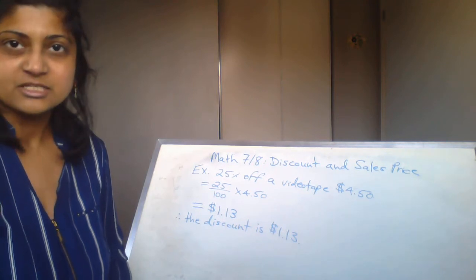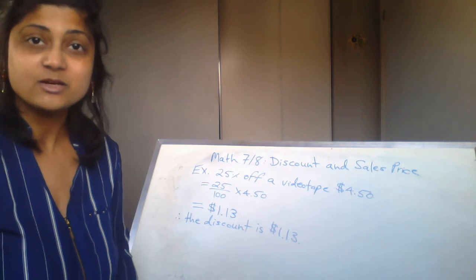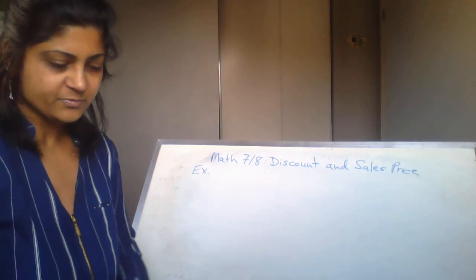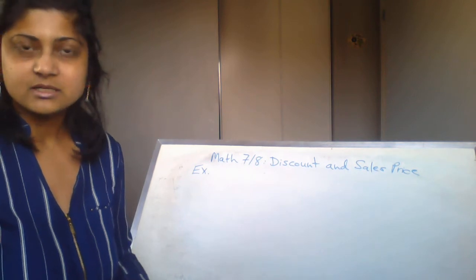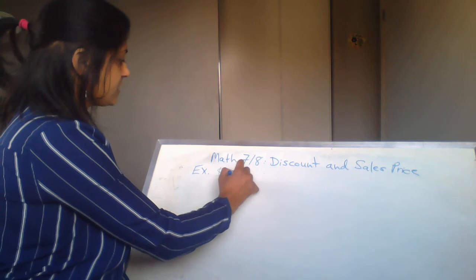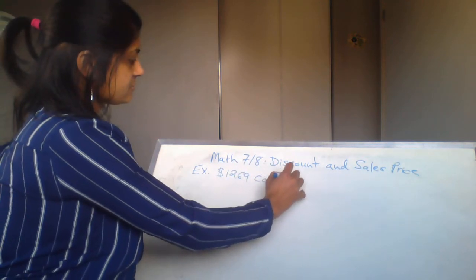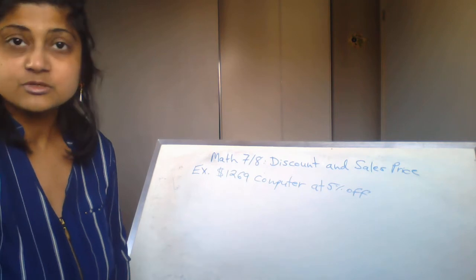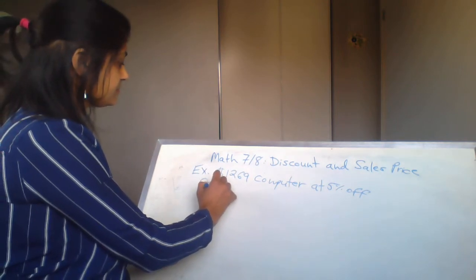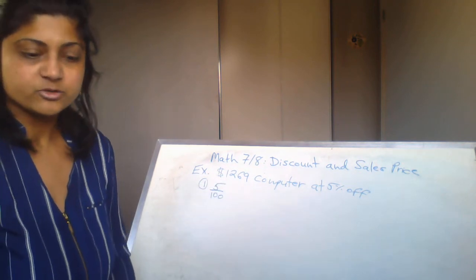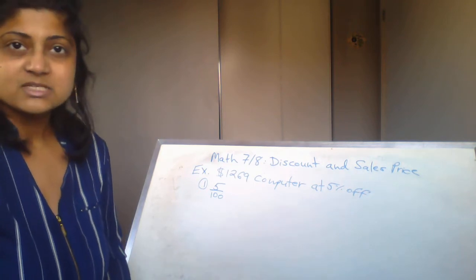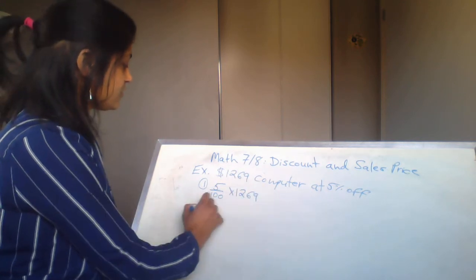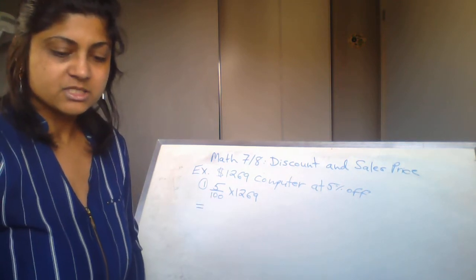Now let's move on to calculating the sale price. Let's pick something bigger — a computer that costs $1,269 and it's 5% off. In the first step, we take 5% and divide by 100. Remember this is not 0.5 — you're moving the decimal place two spots to the left, so it's 0.05. Then we multiply by $1,269.